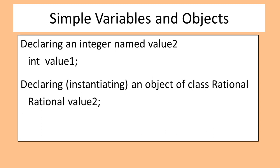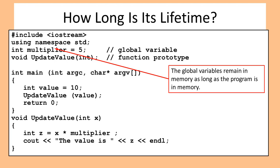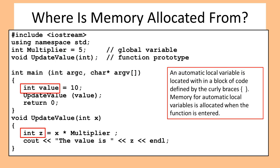Although objects tend to be more complicated than simple data types, objects have the same scope, visibility, and lifetime rules as simple variables. The global variable is located outside of any block of code. The memory for the global variable is allocated when the program is compiled, and global variables remain in memory as long as the program is in memory.